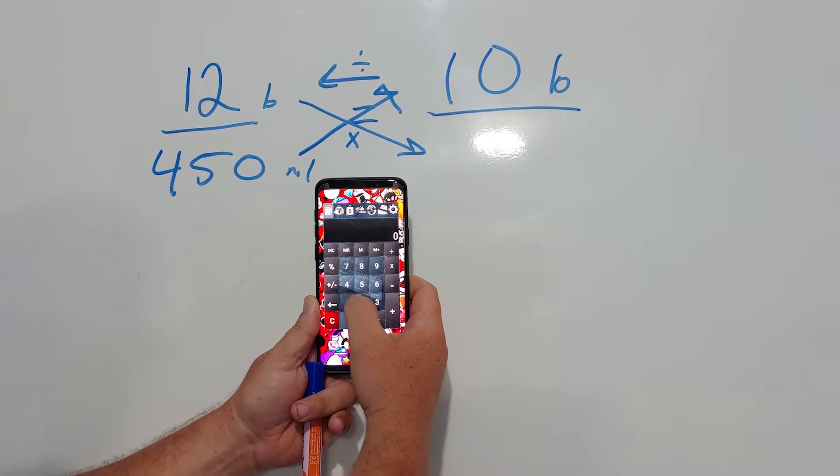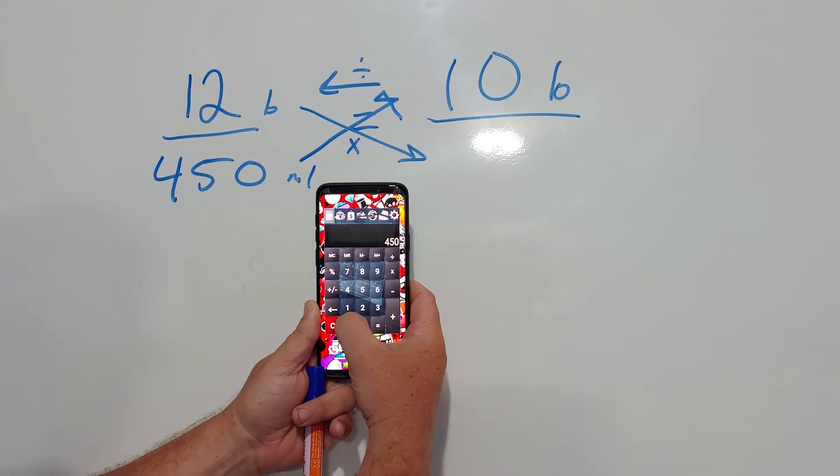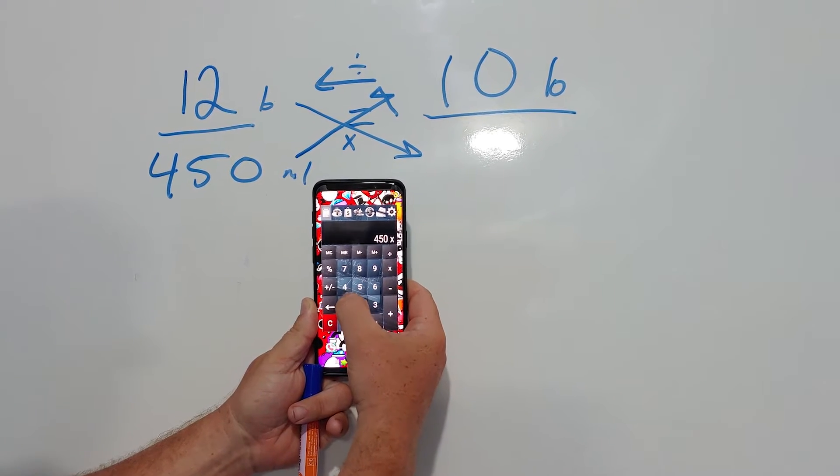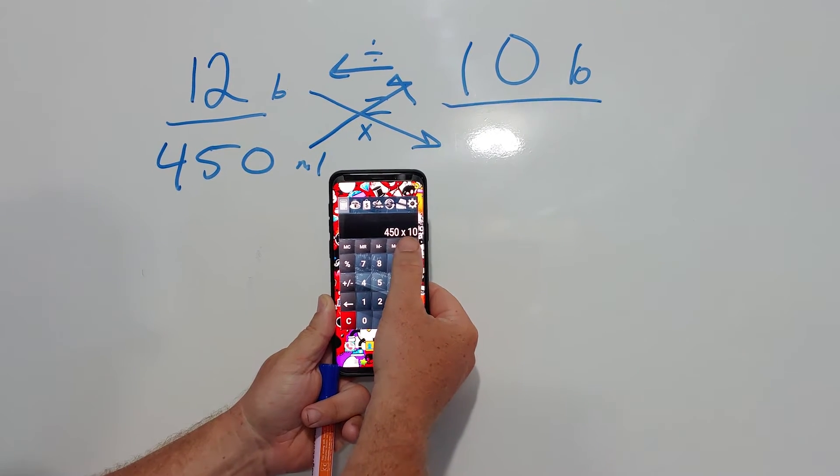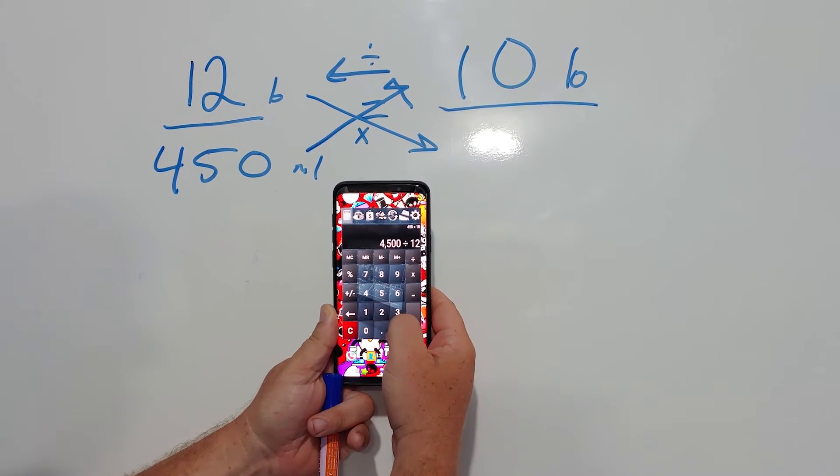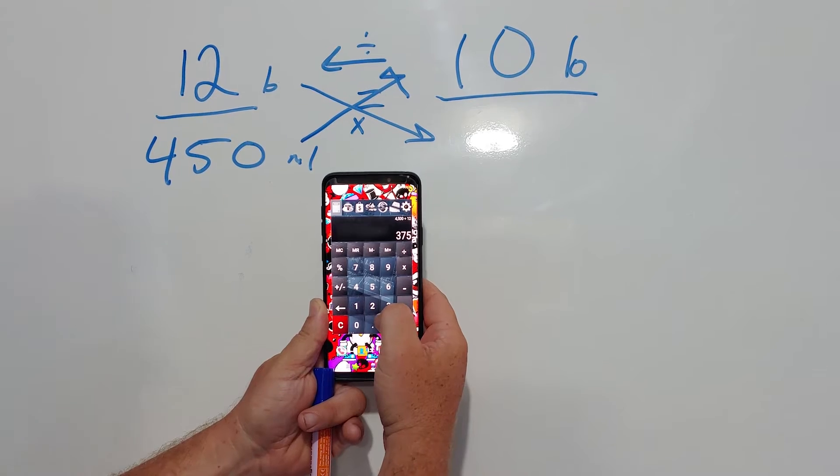Alright, so now all you do is 450 times 10 divided by 12. It's 375.